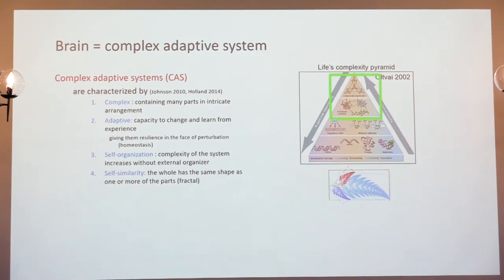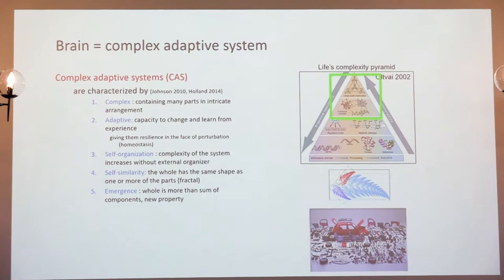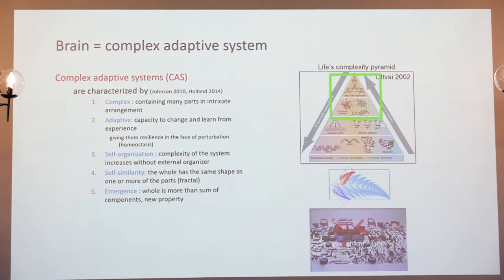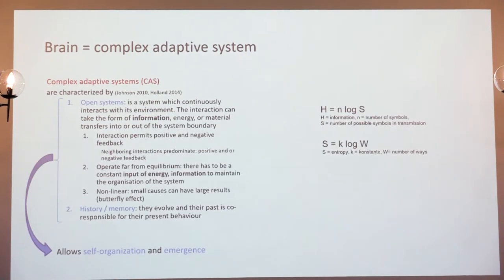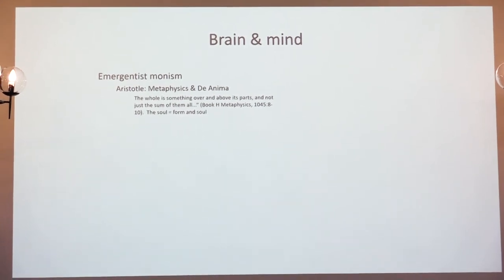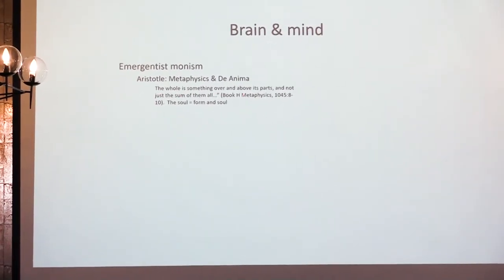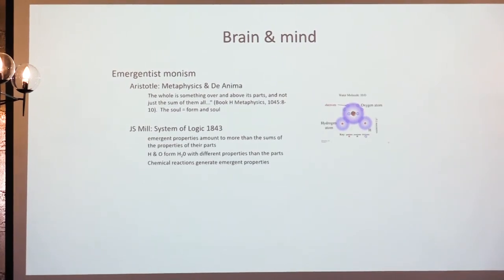But the most important property is emergence: the whole is more than the sum of its components. For example, all the pieces of a car do not make a running car — only if you put all these pieces together in a very specific, connected way do you get a functioning car. Translated to the brain: you have different parts, and it's the connections between those parts that give you a form, that give you information.